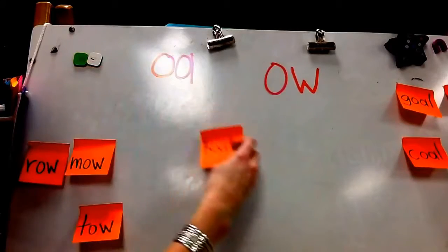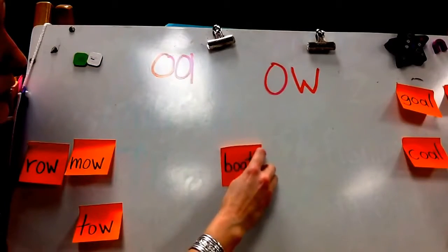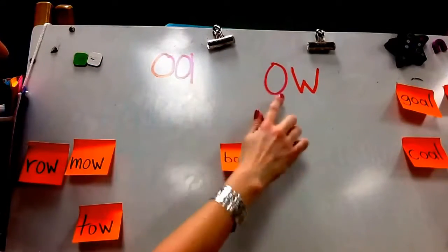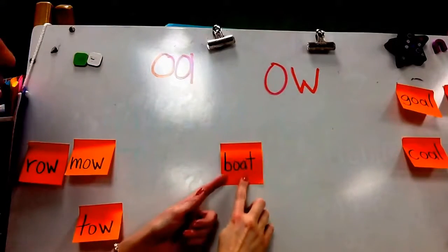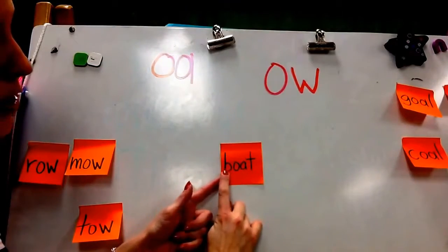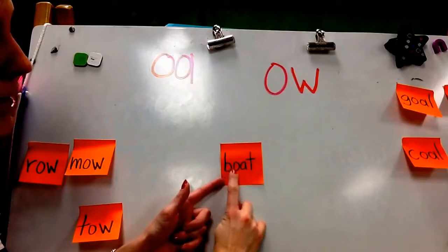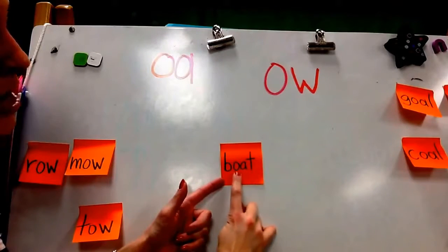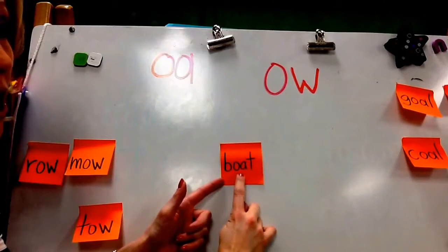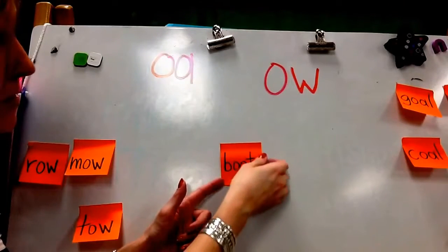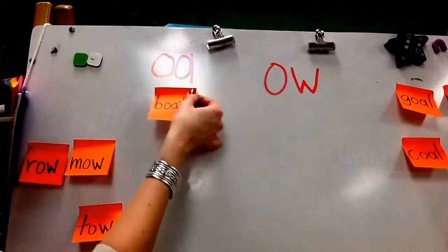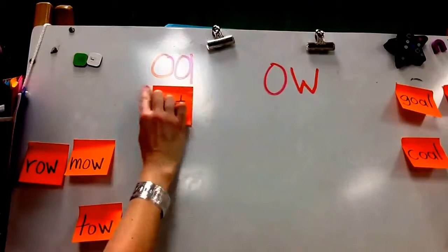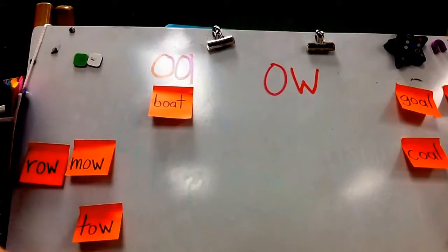This is our first word. When I see OA or OW, I'm going to read it as O. This word is boat. I see OA making the O sound, so I'm going to sort this under OA.